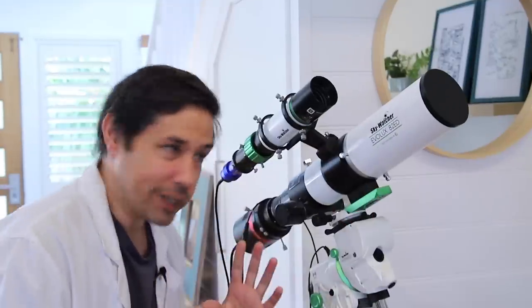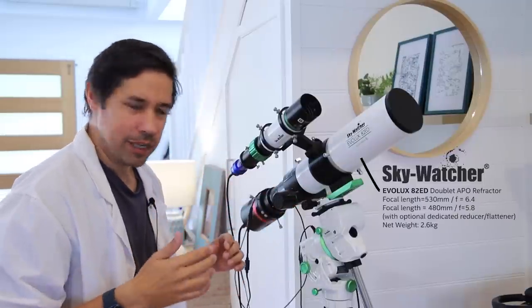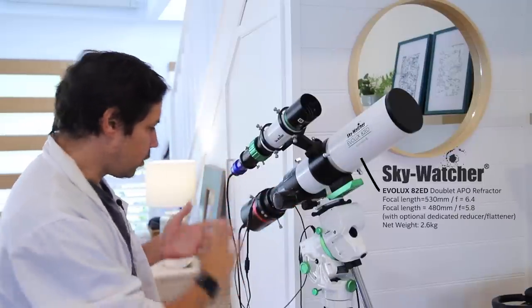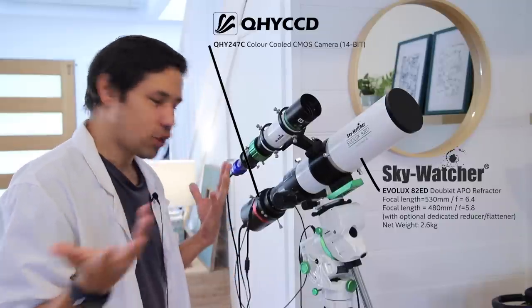Check this out, a little bit of gear porn here. We have the Skywatcher EVELUX 82ED, about 500 and something millimeter focal length with the reducer. We've got the QHY247C, which is the colour camera, so one shot colour, easy.